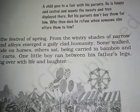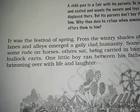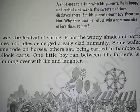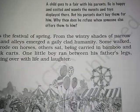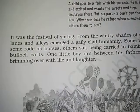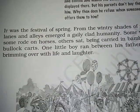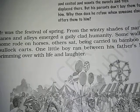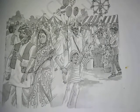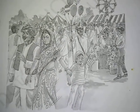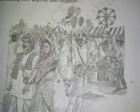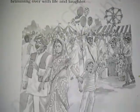'One little boy ran between his father's legs, brimming over with life and laughter.' So here is our central character — the main protagonist of the story. A little boy ran between his father's legs, full of life and laughter. Laughter means he is in a very happy, ecstatic mood. This is the first section of 'The Lost Child' by Mulkraj Anand — the boy full of excitement as the celebration occurs.